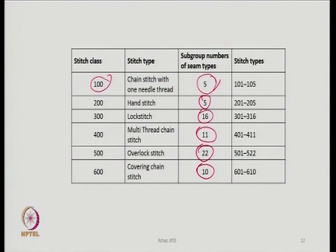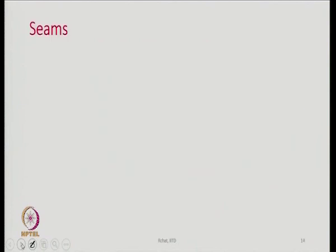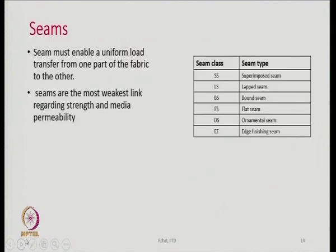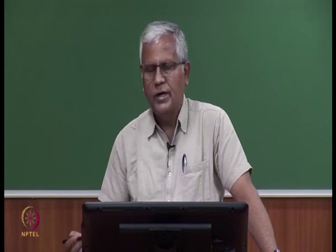There are so many different types of seams available for different purposes. When it comes to seams, the seam must enable a uniform load transfer from one part of the fabric to the other. Seams are the weakest link regarding strength and media permeability because there is a chance of perforations while stitching and a chance of hole formations. Stitching can also lead to damage to the fabric. If the stitching is not done properly, there is a chance of seam puckering — a kind of defect that we get when joining two pieces of fabric.